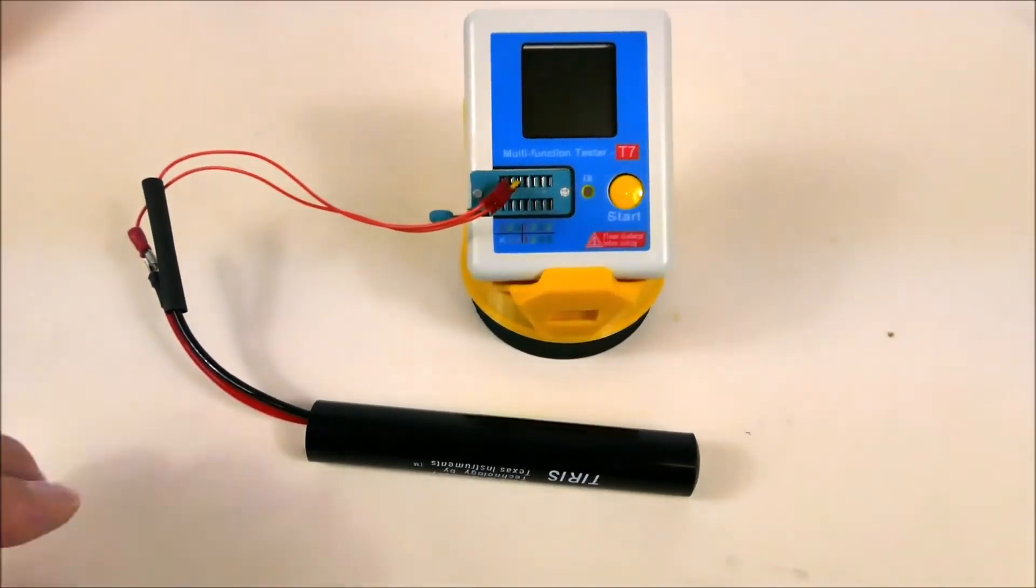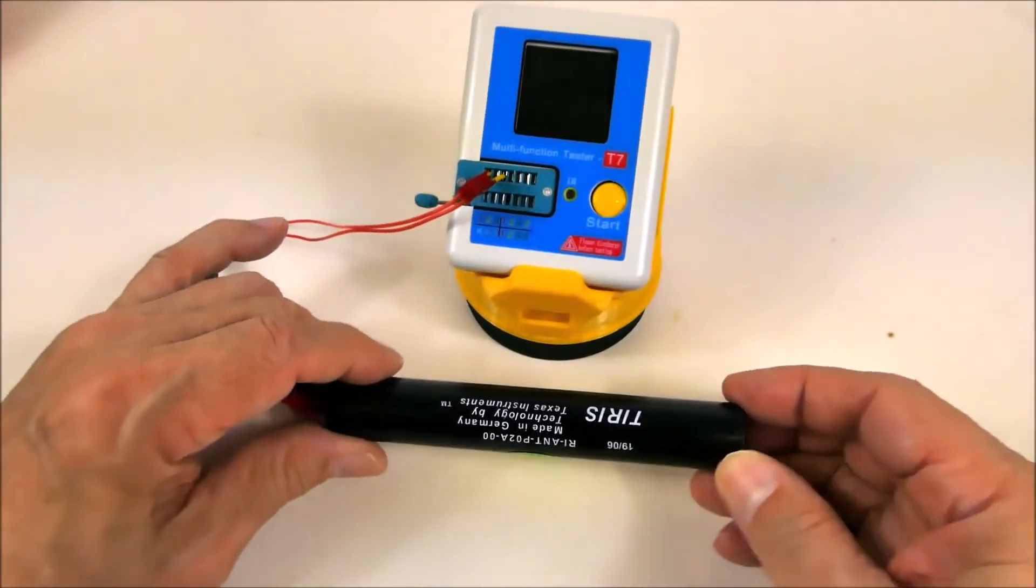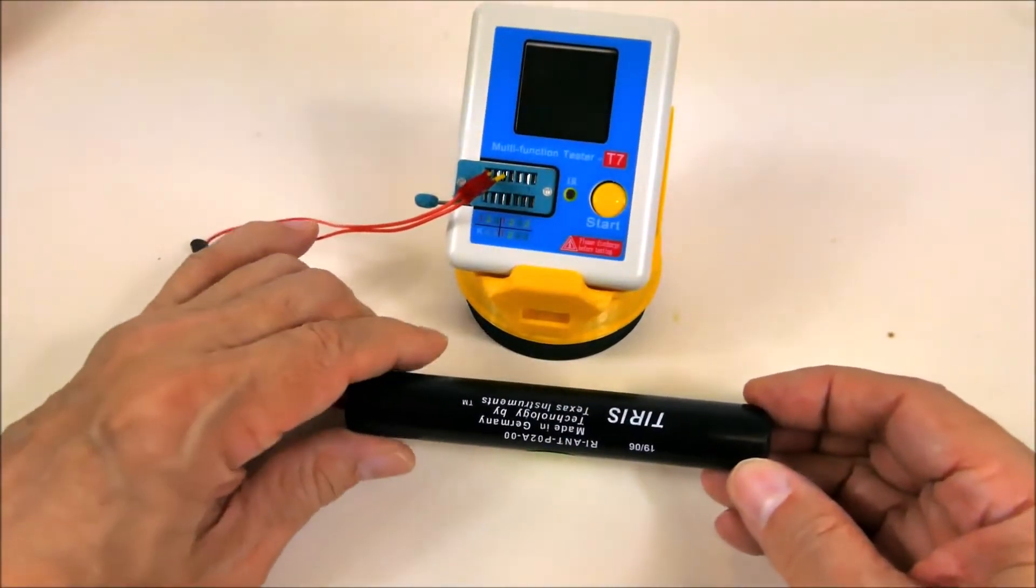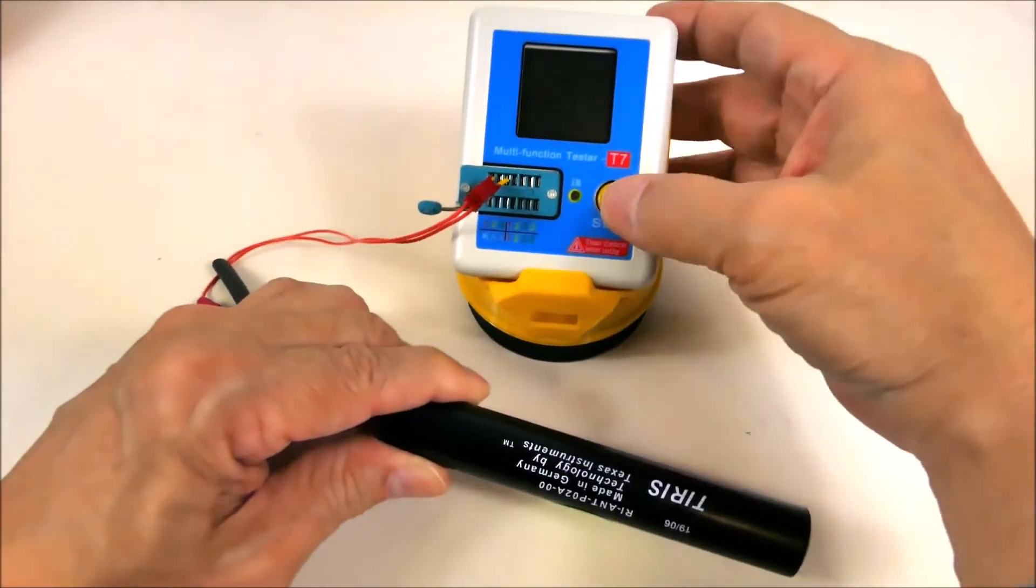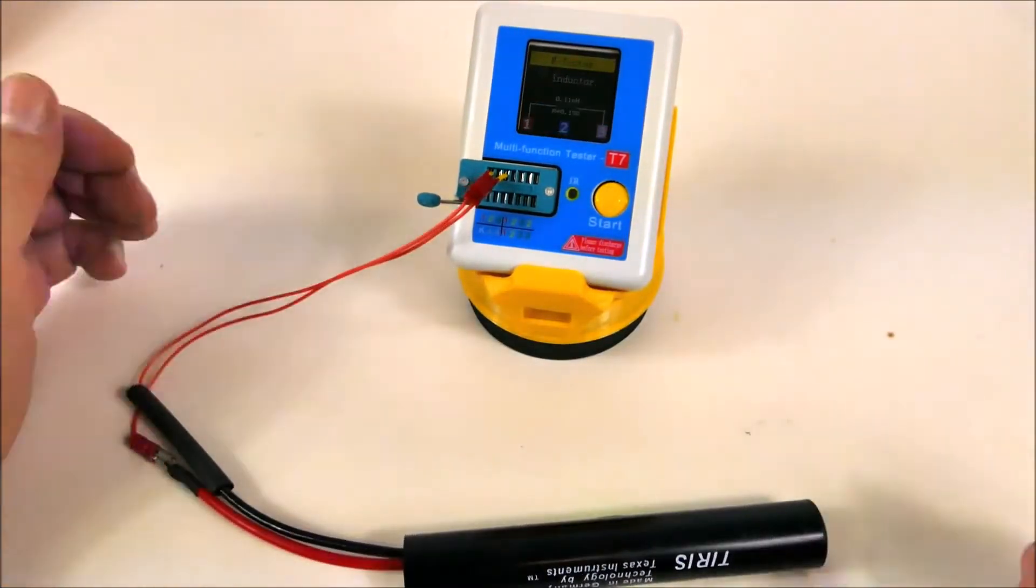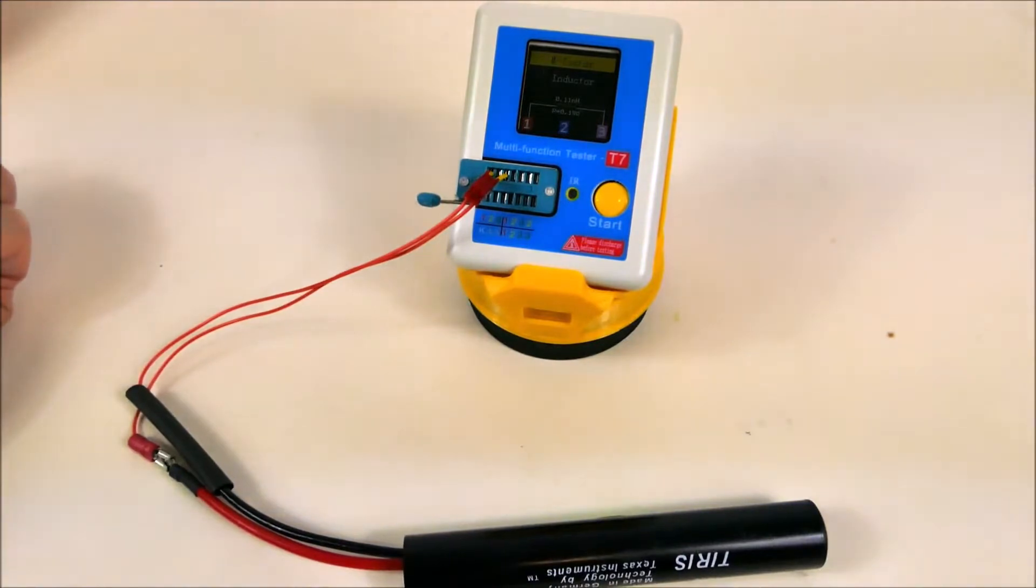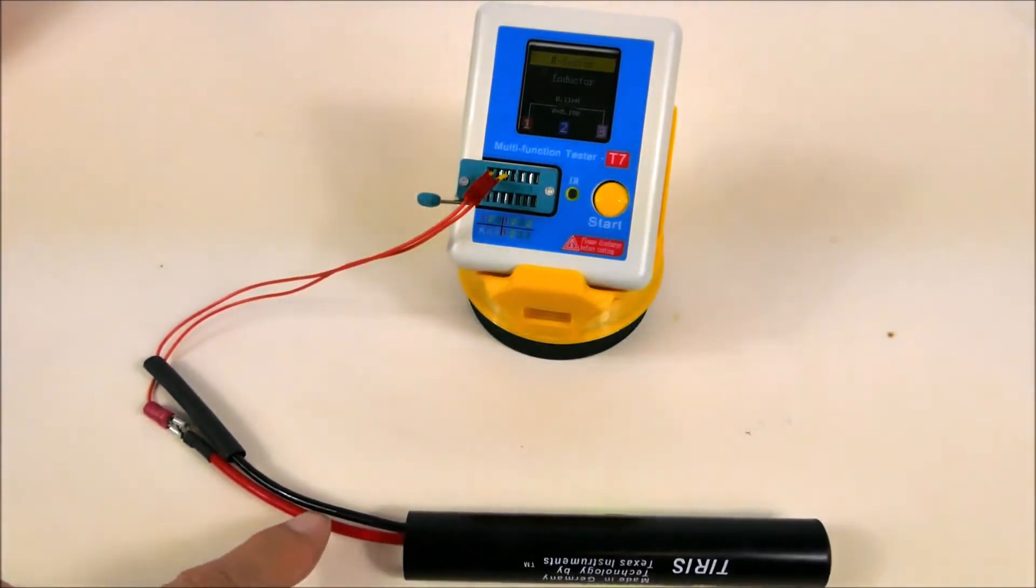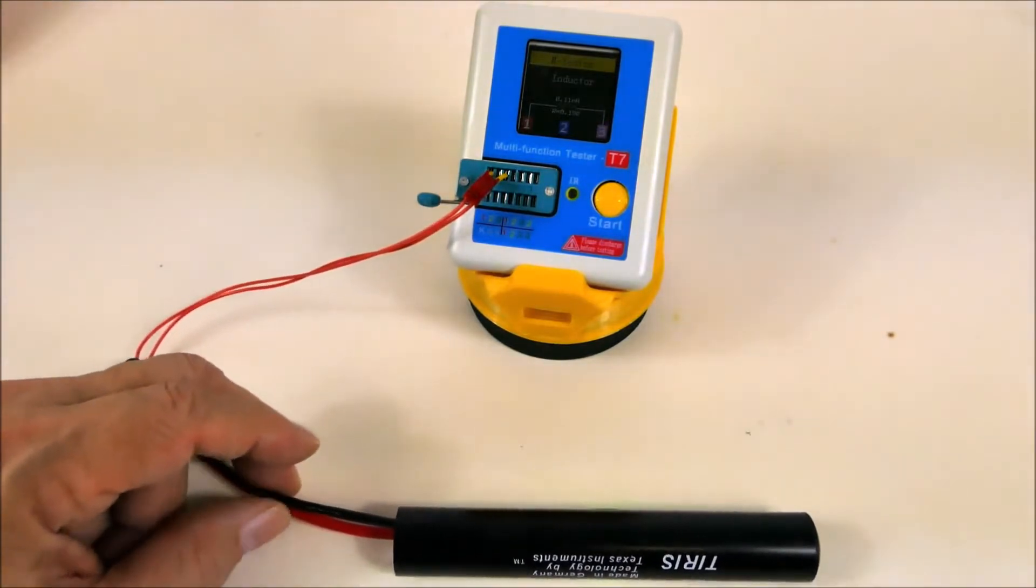This large commercial coil antenna has an impedance of 1.1 millihenrys and a resistance of 0.19 ohms. It's got these major leads down here which allow a lot of power through it.